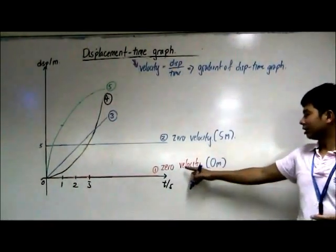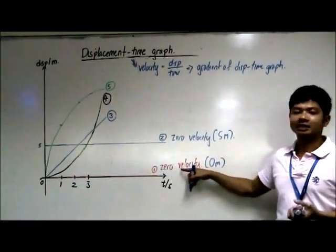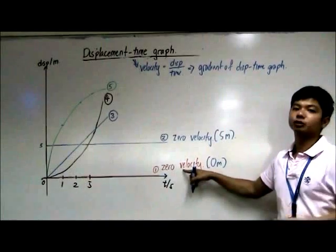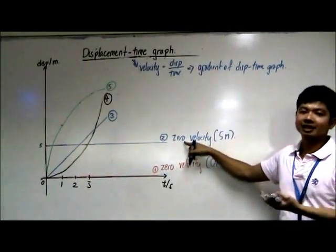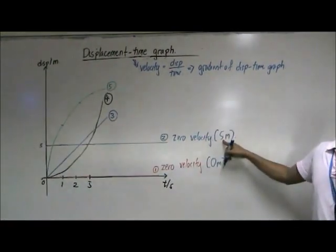Basically, this means the object represented by the red line is stationary at a position of zero meter, and the blue line represents an object that is stationary at five meter.